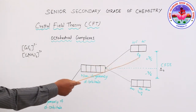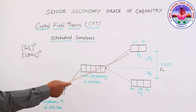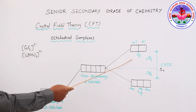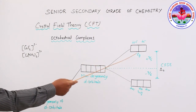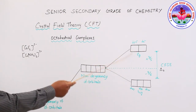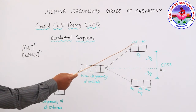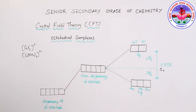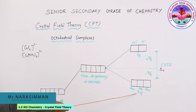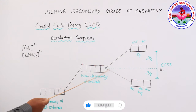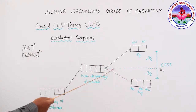In octahedral complexes, the ligands approach along the axes. So the Eg orbitals — Dx²−y² and Dz² — have their lobes along the axes, and their energy rises due to greater repulsion. The T2g orbitals have their lobes between the axes, so they experience less repulsion and their energy is lowered.